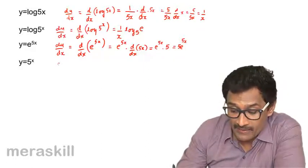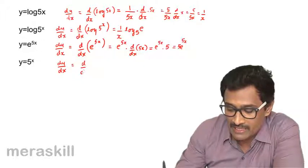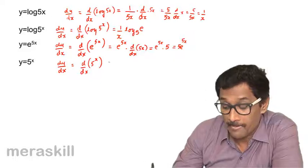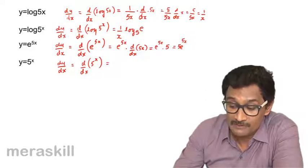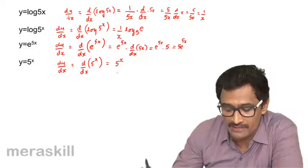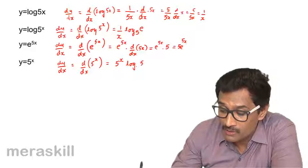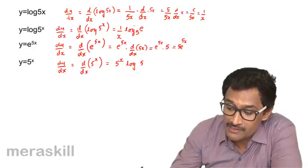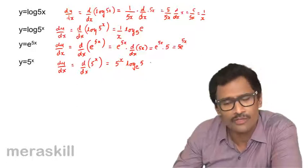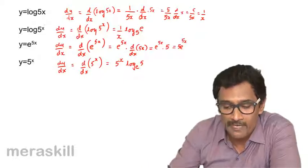For y = 5^x, dy/dx = d/dx of 5^x. This uses a rule different from log(5^x). For a^x, the derivative is a^x · log_e(a), so here it is 5^x · log(5) — note this is log 5 to the base e, unlike the earlier case which was log e to the base 5.